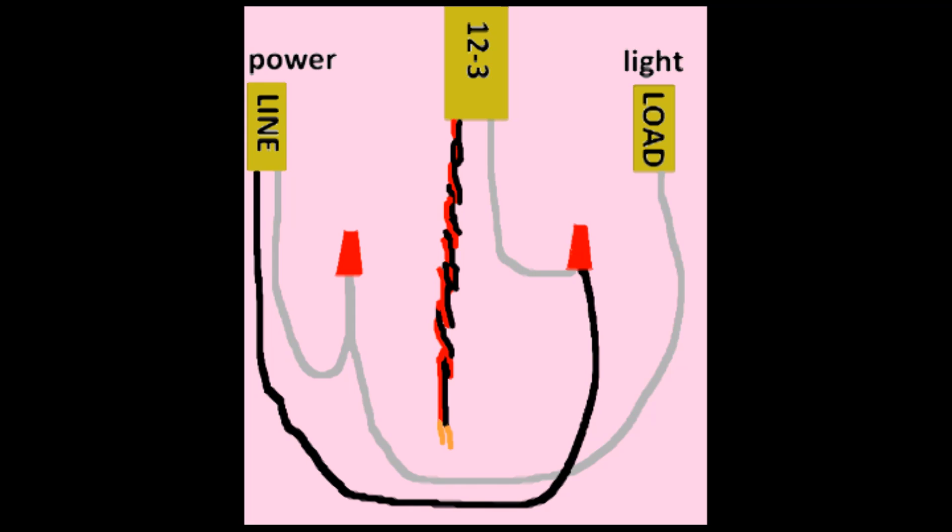The next step is very critical. You wire nut the hot leg of the incoming line to the neutral wire of the 12-3. This means that your white wire on your 12-3 is both your line and load traveler.